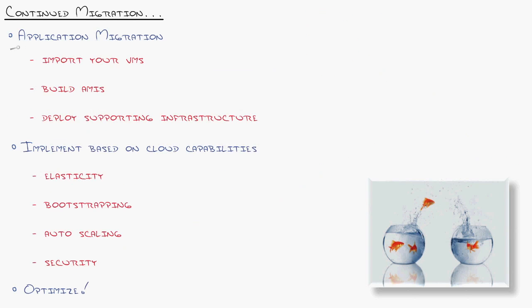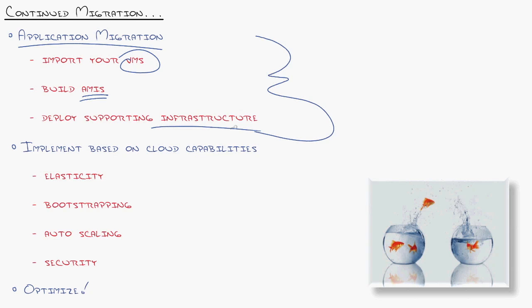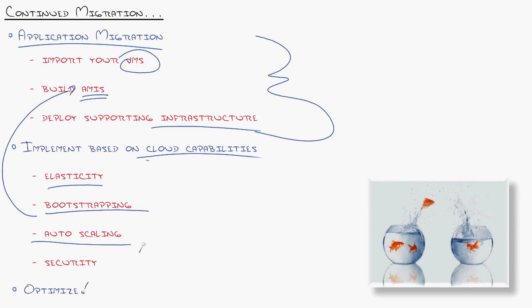Now we come to the fun part — getting the application actually working in the cloud. This is where you import your virtual machines from VMware, build your Amazon Machine Images — your essentially hard drives on ice, the base that you build from — start running your instances, and then deploy the supporting infrastructure using all the AWS services in that web GUI. Implement it thinking about cloud capabilities like elasticity, the ability to shrink or grow your infrastructure based on demand on the fly. Bootstrapping — configuring those AMIs so that as they boot they learn what they are and join your infrastructure. Autoscaling — monitoring based on time of day and load, bringing more servers up or down. The beauty of Amazon Web Services is you can scale to thousands of servers and back down to nothing in a matter of minutes.